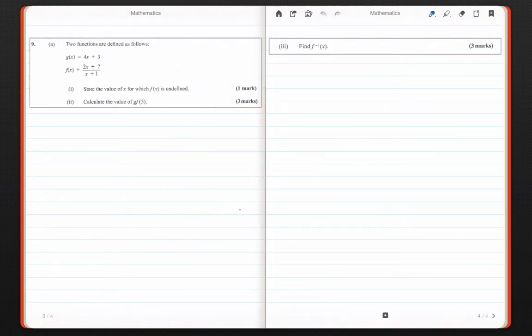In this question we are given two functions gx and fx and we are asked a series of questions. The first question asks us to state which value of x for which f of x is undefined. So let's have a look at f of x. f of x is 2x plus 7 divided by x plus 1, a rational function.